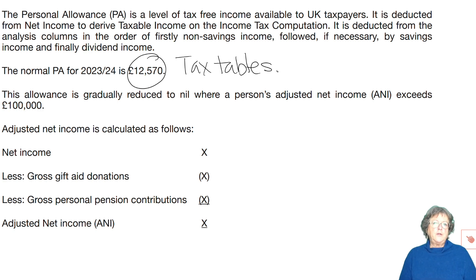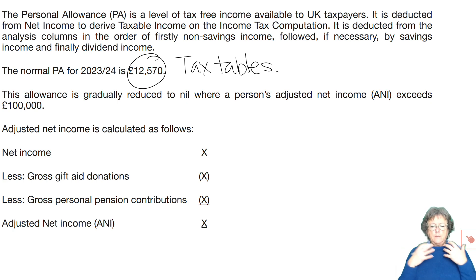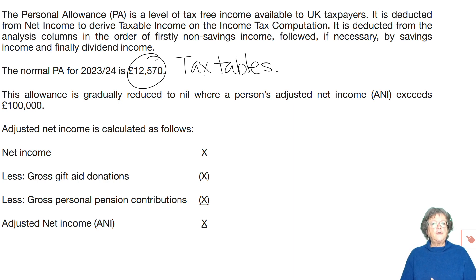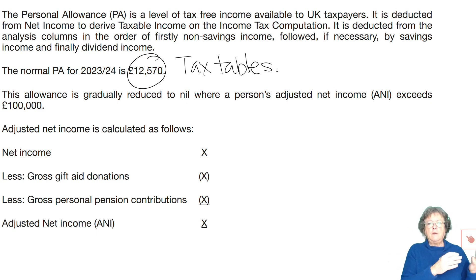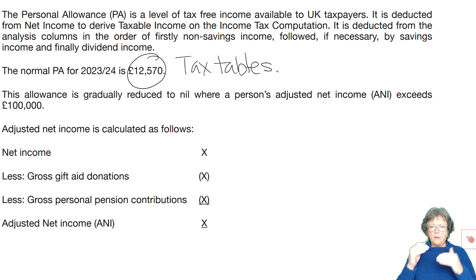The government cannot easily change the basic rate band. Most individuals know they pay tax at 20%, and if you stop messing with that there's uproar — it's all over the news, headlines, the budget. But the government's income needs to cover rising expenses, and if it can't raise the basic, high, or additional rates, then it needs to raise tax somehow. So they can play around with the personal allowance.